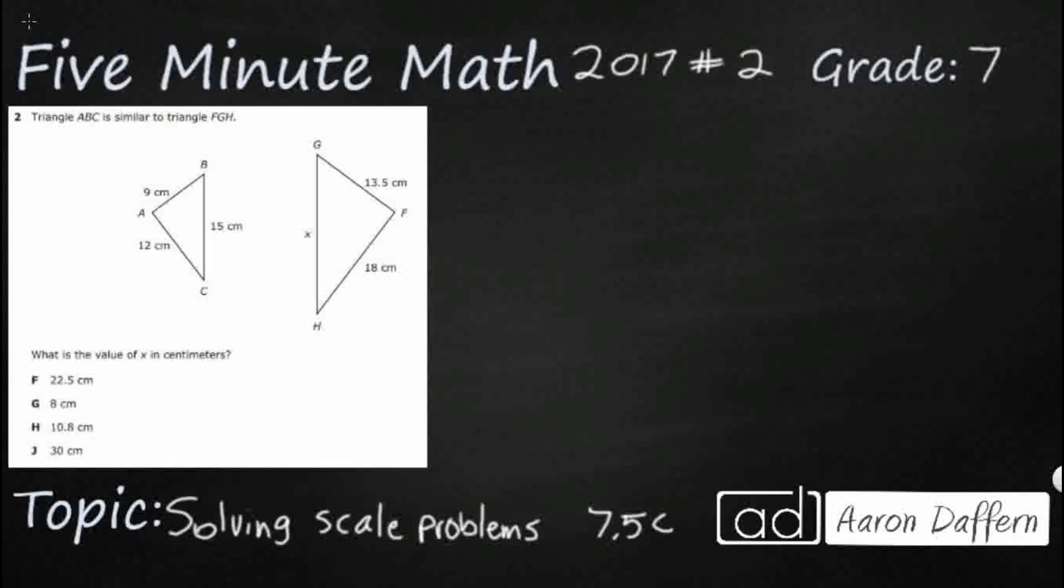So we've got two triangles that are similar. So that's going to be our keyword right there. Very important. Similar means we have the same shape. So they're both triangles and they're both the same type of triangle. They're just different sizes.